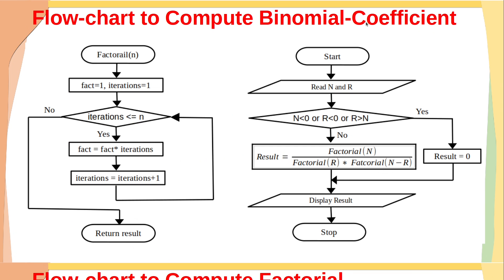This is the flowchart to compute binomial coefficient. Once we start, we read n and r. Then we check whether n is less than 0, or r is less than 0, or r is greater than n. If this condition is true, result is set to 0 and we display the result. If false, we calculate result as factorial of n divided by factorial of r into factorial of n minus r, then display the binomial coefficient.